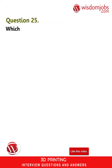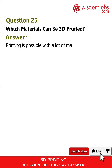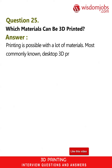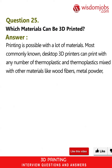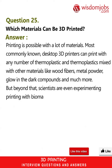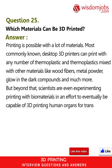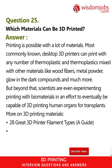Question 25: Which materials can be 3D printed? Answer: Printing is possible with a lot of materials. Most commonly, desktop 3D printers can print with any number of thermoplastics and thermoplastics mixed with other materials like wood fibers, metal powder, glow-in-the-dark compounds and much more. Beyond that, scientists are even experimenting with printing biomaterials in an effort to eventually be capable of 3D printing human organs for transplants. More on 3D printing materials: 28 great 3D printer filament types — a guide — and 32 unique types to 3D print.